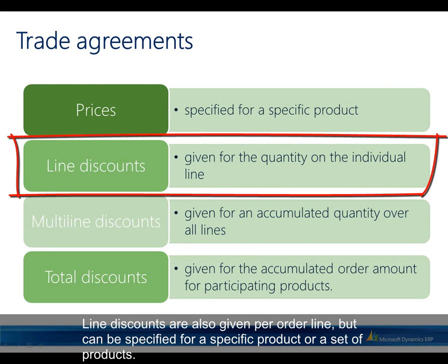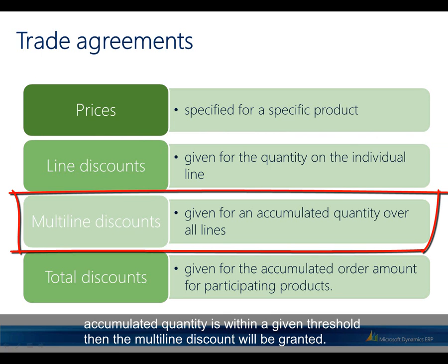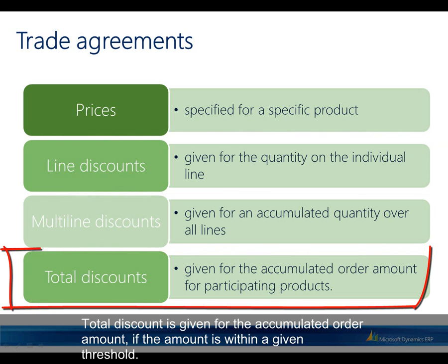Line discounts are also given per order line but can be specified for a specific product or a set of products. Multi-line discounts are given for an accumulated quantity over all order lines — if the accumulated quantity is within a given threshold, the multi-line discount will be granted. Total discount is given for the accumulated order amount if the amount is within a given threshold.